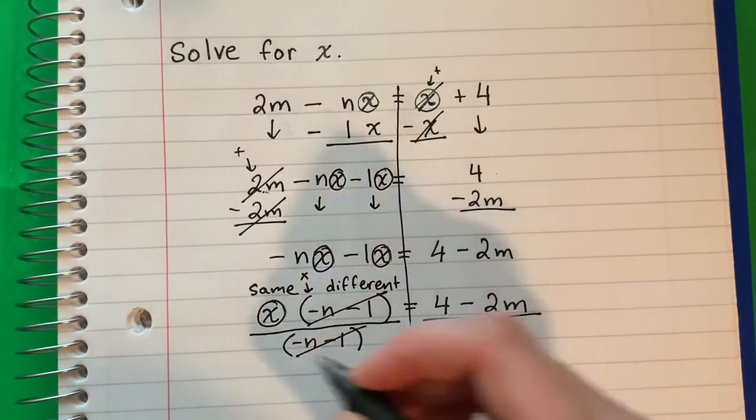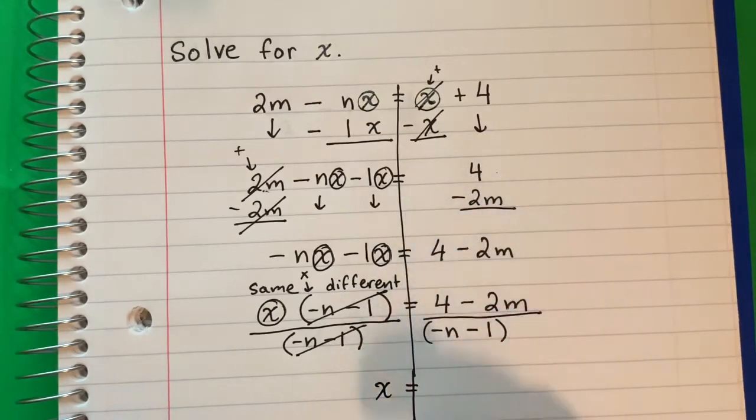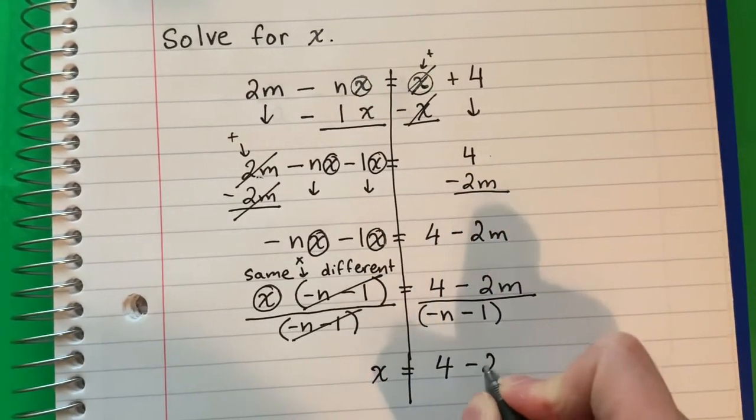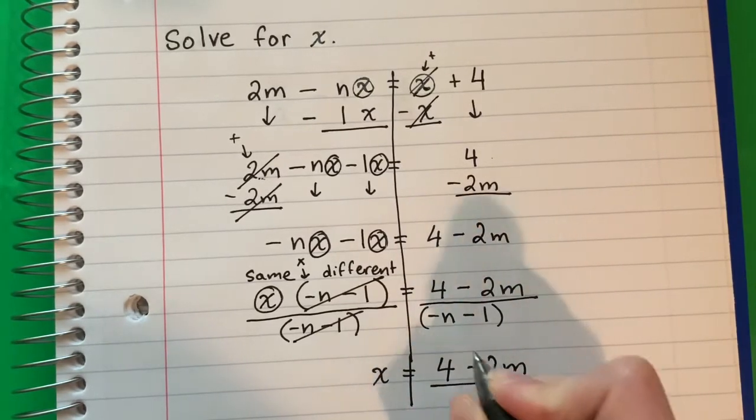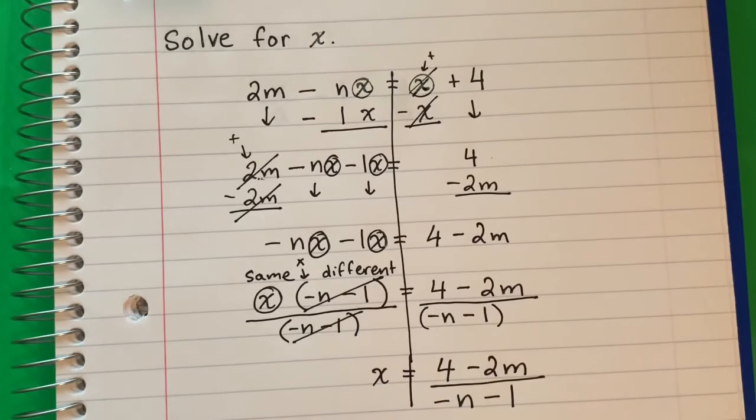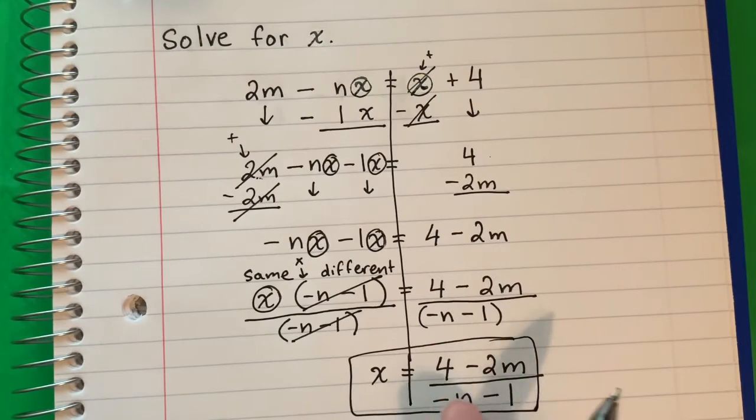I'm going to copy the x. Equals. And this I'm going to copy. So 4 minus 2m divided by negative n minus 1. And that's where I'm going to stop. Remember no parenthesis here because they are already alone in the denominator.